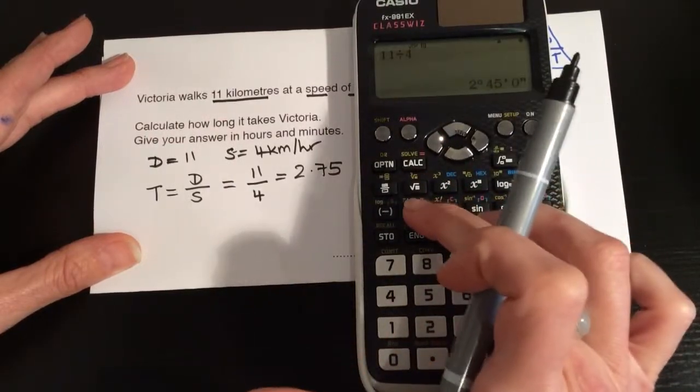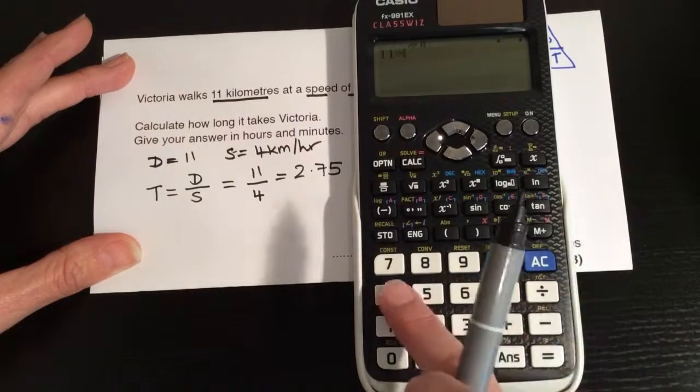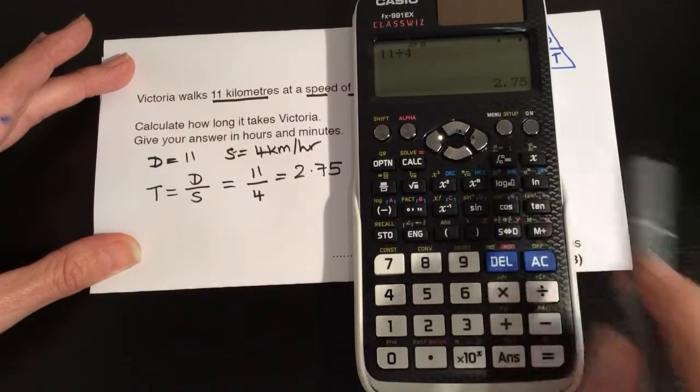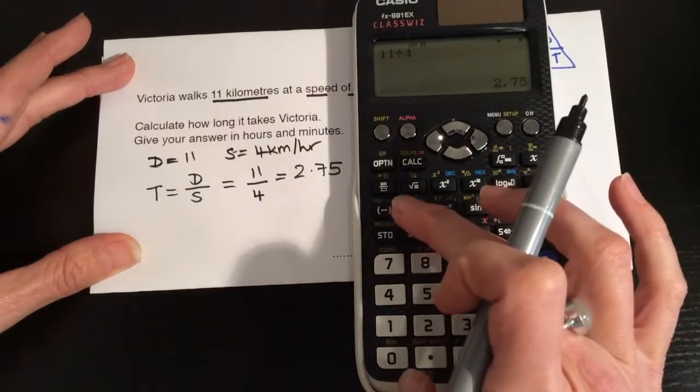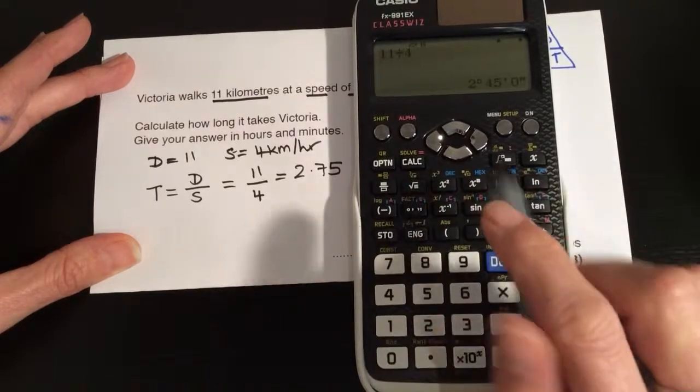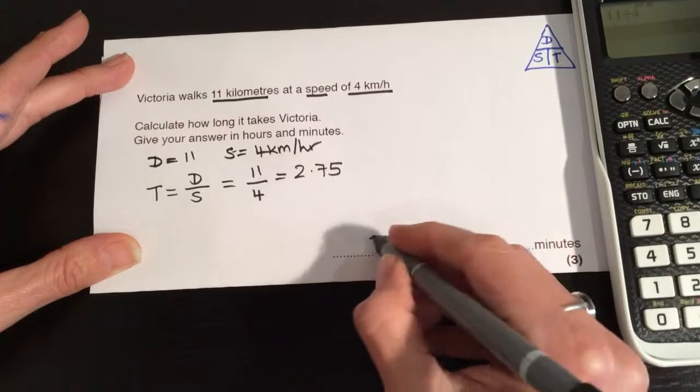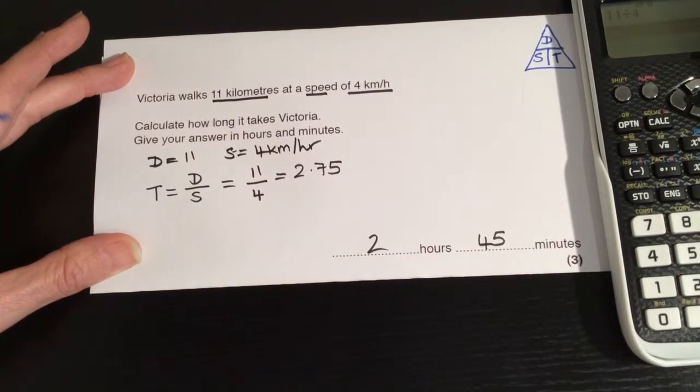So that is, we just press this button here. Let me show you that again. So 11 divided by 4 equals, that was the original value we got, 2.75, and if we want to convert that into hours and minutes, we press this button here, and that means it's 2 hours and 45 minutes, so we can give the examiner exactly what he wants for 3 marks.